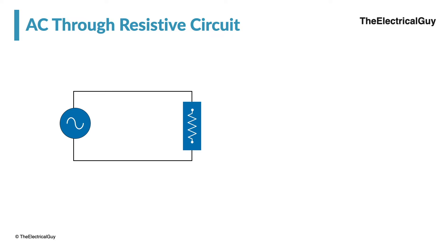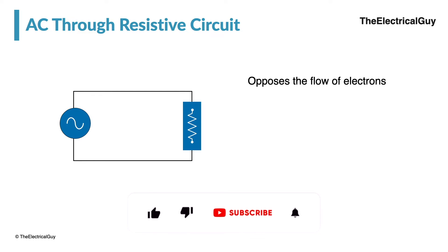Now let us talk about AC through a resistive circuit. Resistance simply opposes the flow of electrons. It doesn't matter what the magnitude of current is — whether it's 5A, 15A, or 500A — and it also doesn't matter whether the current is alternating or constant. Anything you pass through a resistor, it will simply oppose that flow. That is why a resistor always follows Ohm's law.